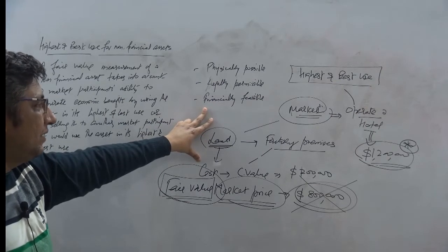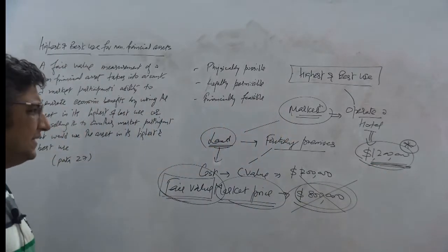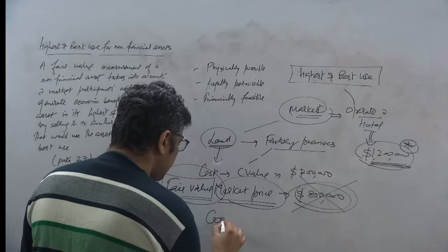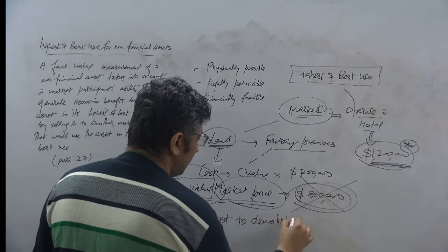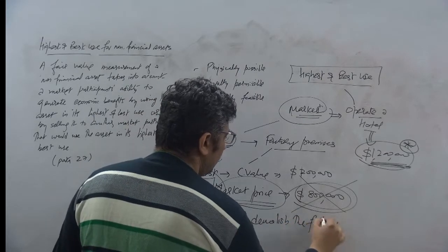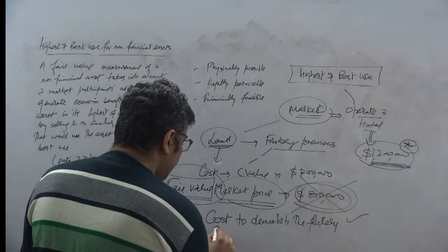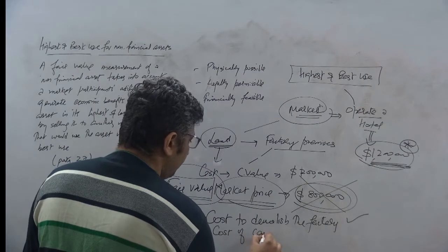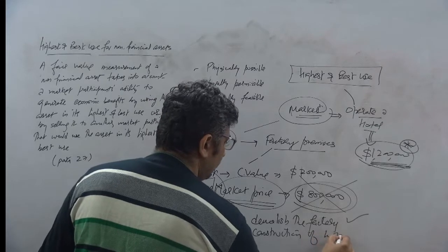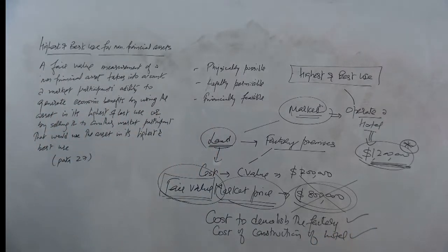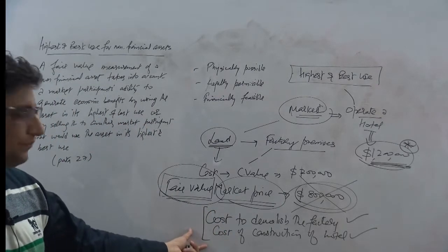Now, importantly, what is this 1.2 million? What is this 1.2 million all about? We are saying that there would be a cost to demolish the factory. You need to incorporate that, you need to factor that amount. There would be a cost of construction of the hotel. You need to factor that as well, right. And, by the way, it takes time to demolish as well as to construct something new, okay.